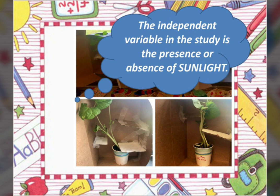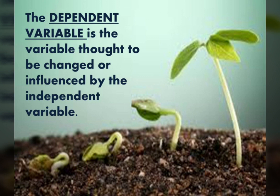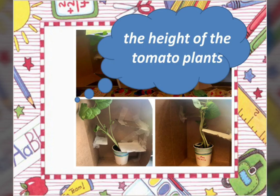How about the dependent variable? What is being changed when you manipulate the independent variable, or what receives the effect? If your answer is the height of the tomato plants, then you are right. The outcome variable measured in each subject, which may be influenced by manipulation of the independent variable, is termed the dependent variable. In experimental studies where the independent variable is manipulated, the dependent variable is the variable thought to be changed or influenced by it. Again, the height of the tomato plants is our dependent variable.